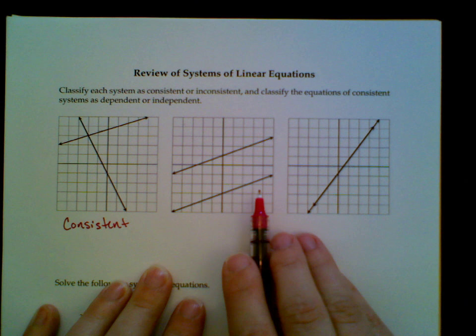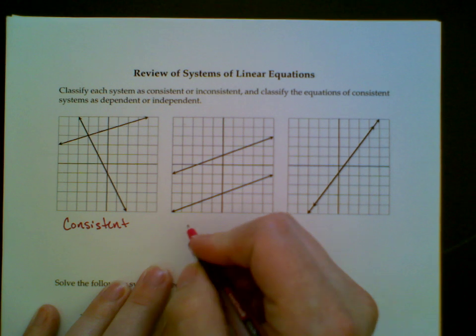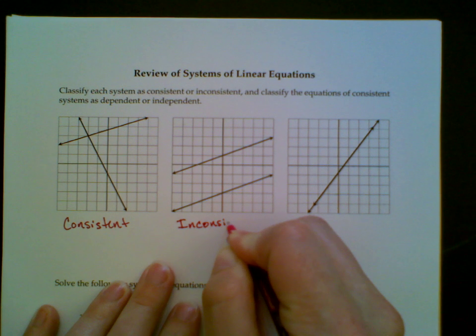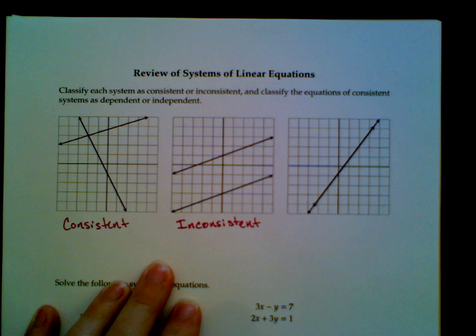Since they never touch, they're never going to have a point that is on both lines, and so this is an inconsistent system of equations.